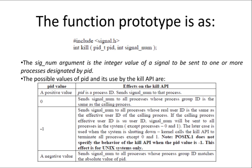If the PID value is -1 and the calling process's effective user ID is the super user ID, then the signal number will be sent to all processes in the system, because we have super user privilege. If the calling process is a super user — which has all privileges — the signal will be sent to all processes in the system, irrespective of any process, except process IDs 0 and 1.